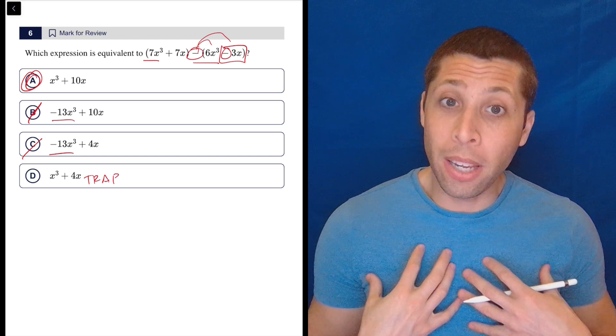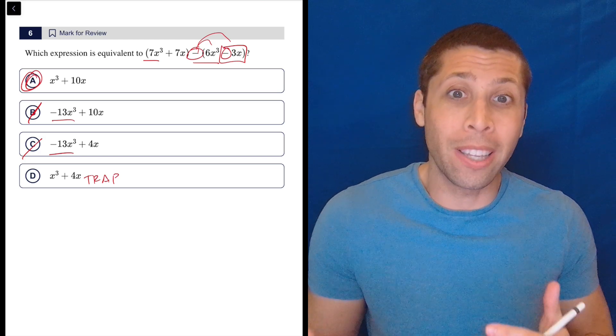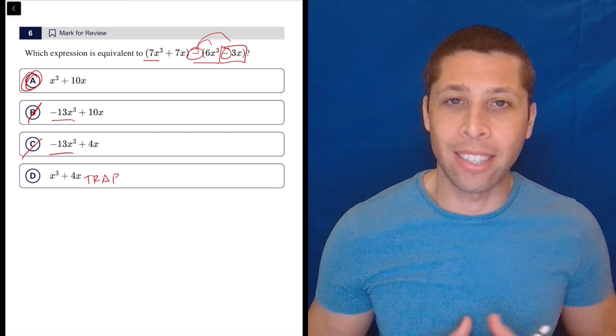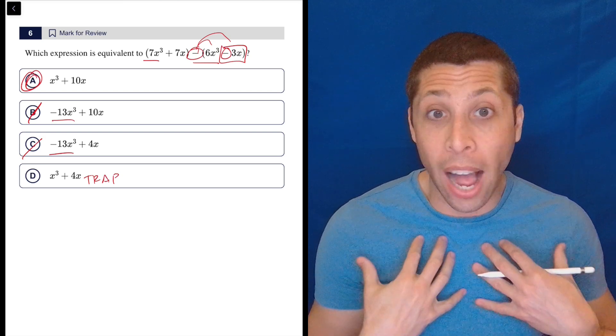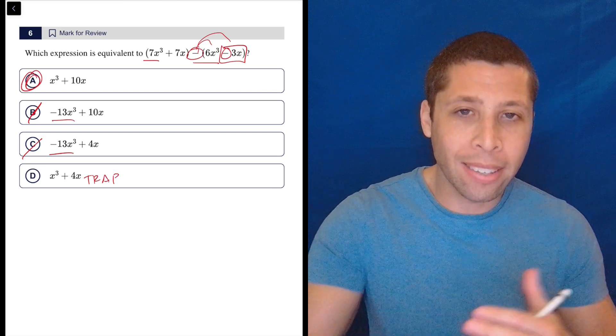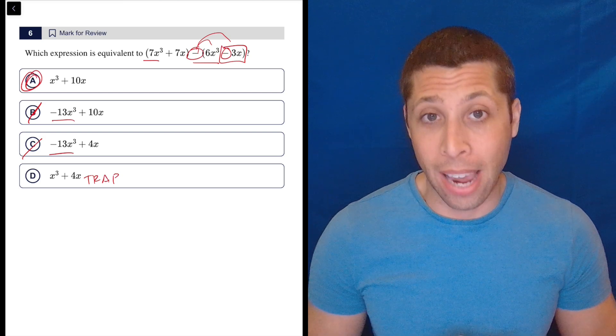So part of that for me is thinking as I'm doing the question about what the SAT wants me to do wrong. And I see a negative being distributed. I'm like, ah, that's a classic mistake, classic thing that kids get wrong. I get wrong. So I'm thinking about the potential for the error as I'm solving it, which makes me much less likely to actually make the error.